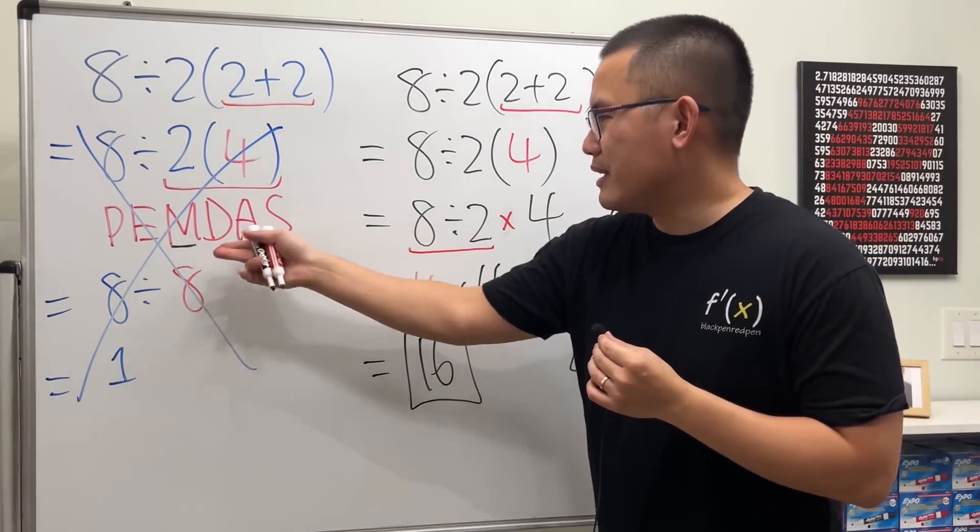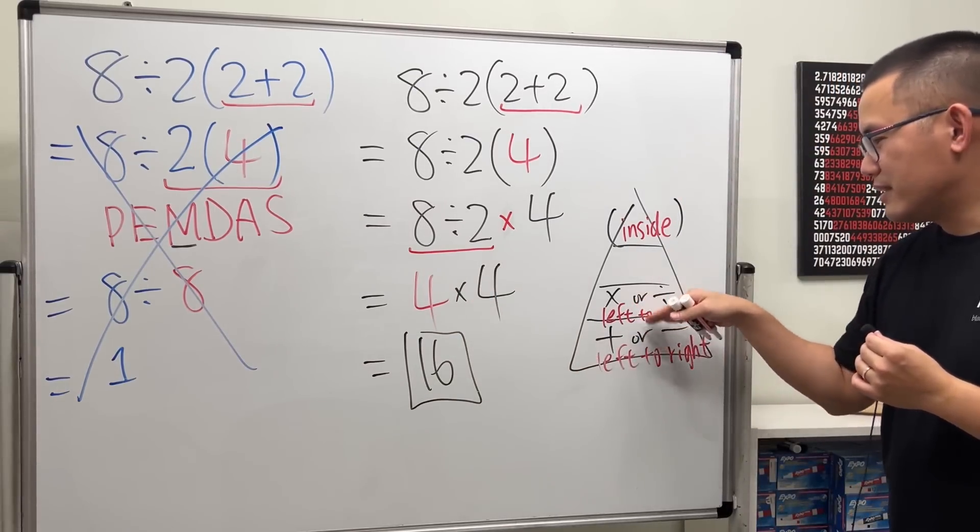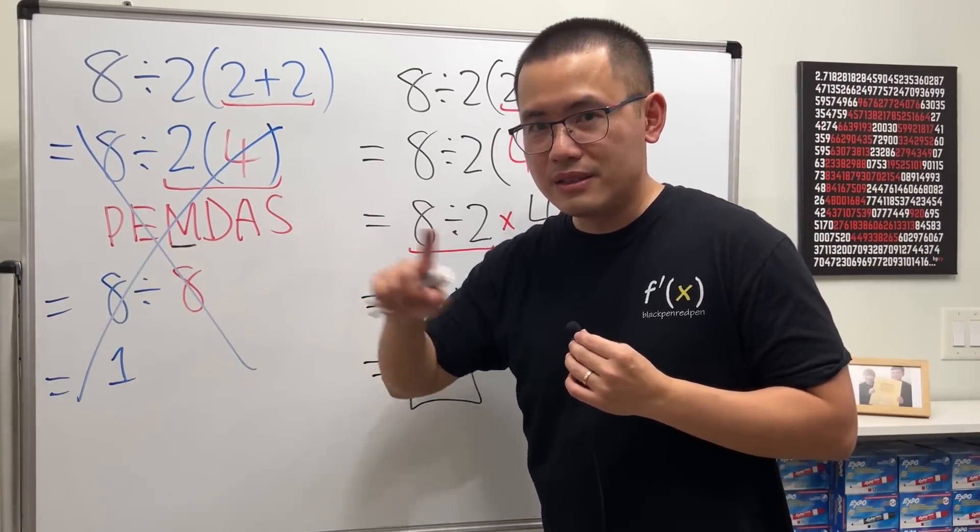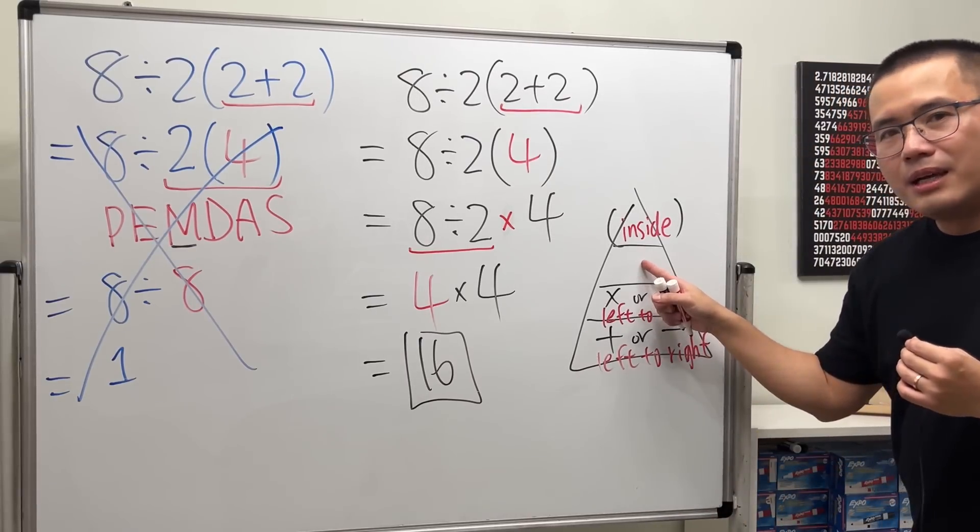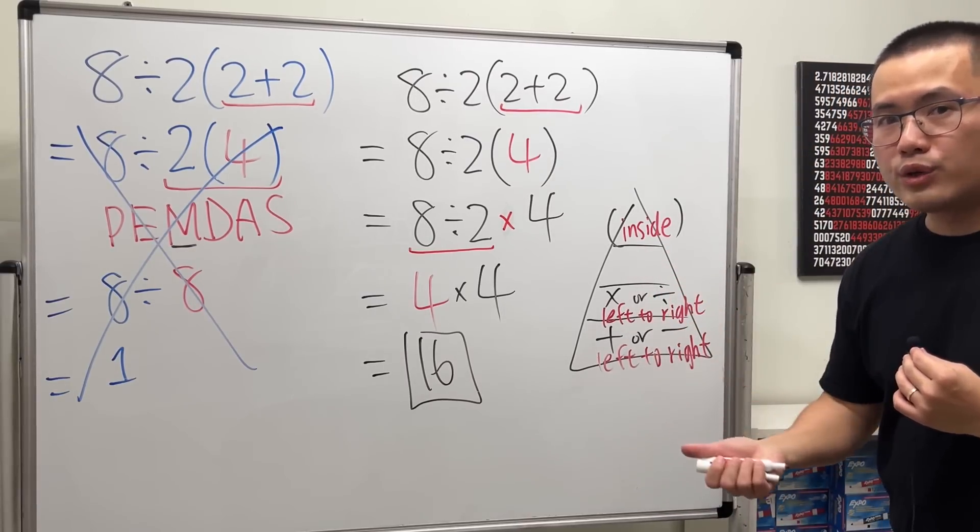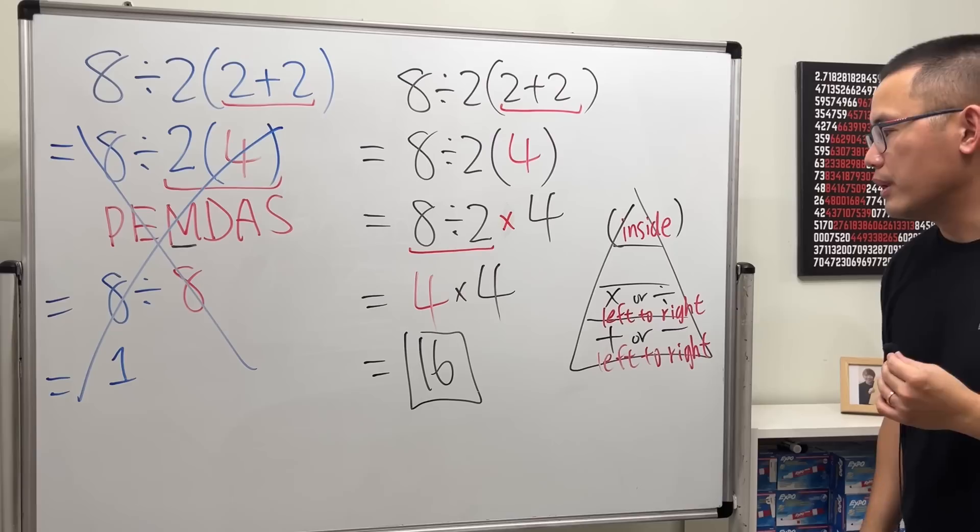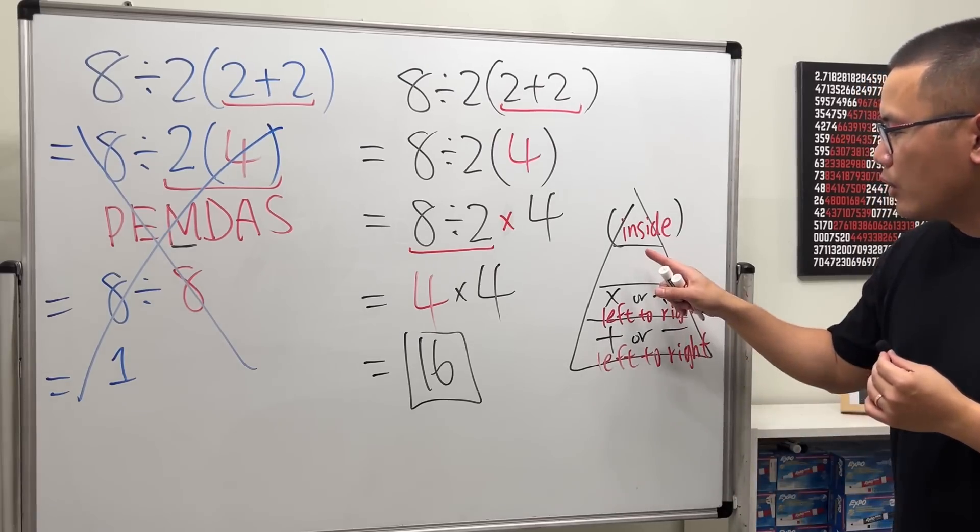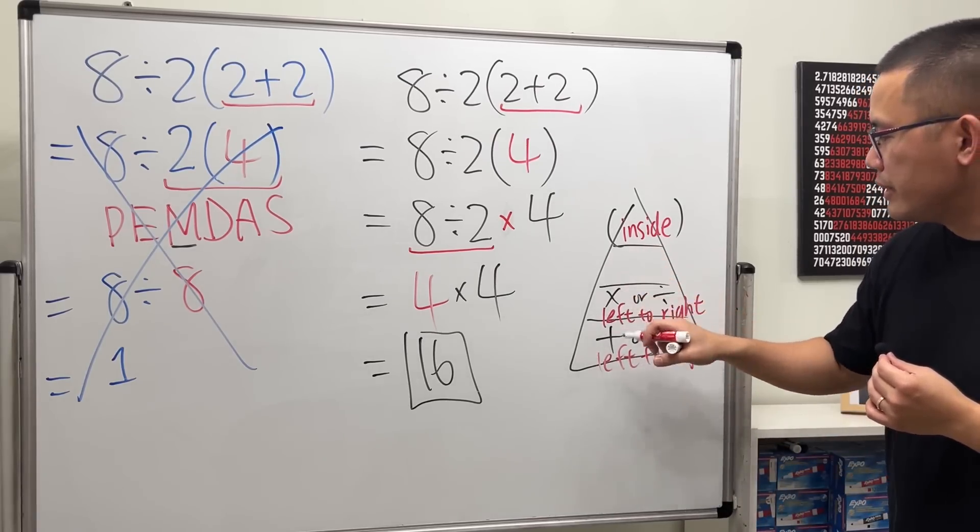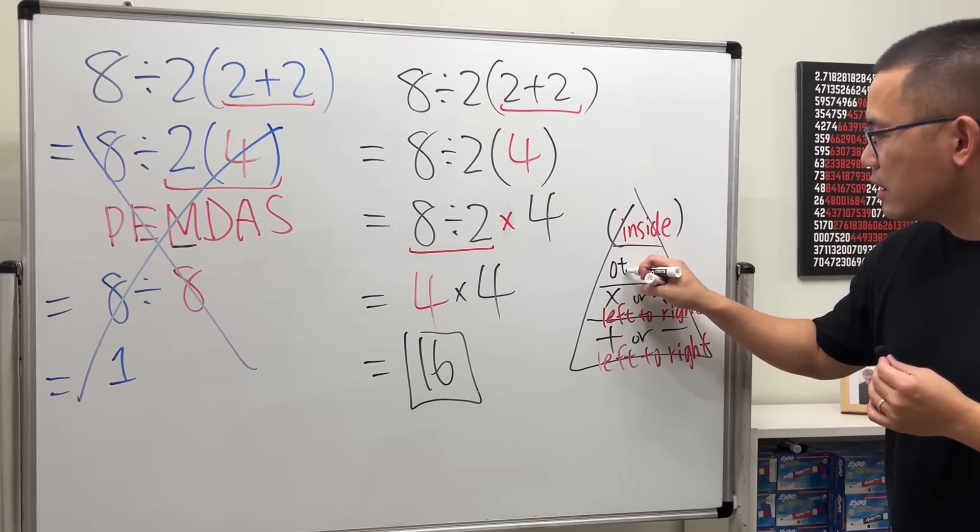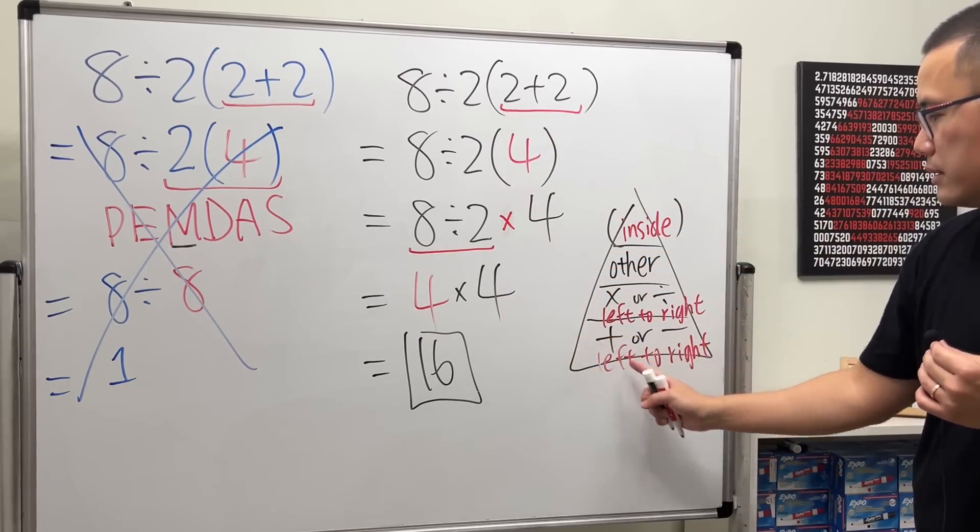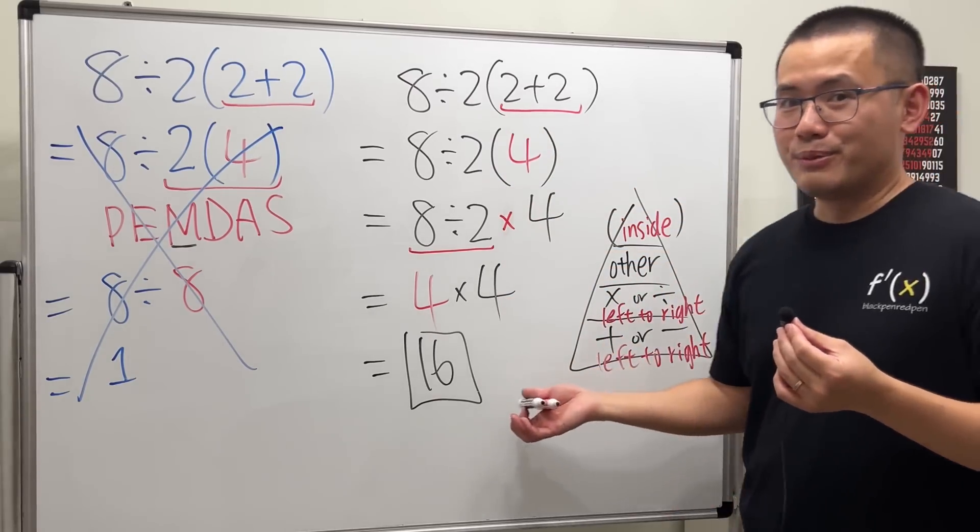And again, PEMDAS—not my favorite. This right here is better. What does the E stand for? It stands for exponents, yes. But later on you also see square roots, you also see absolute value, and if you do trig, you also see sine, cosine, right? So right here, I will put down 'other operations.' But this right here, the main focus is this. Yeah, that's pretty much it.